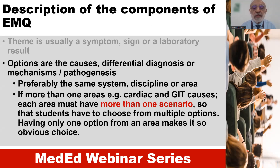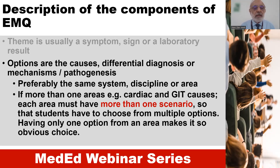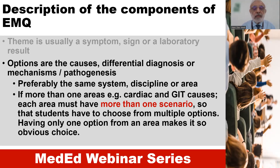If more than one area is covered — for example, cardiac and gastrointestinal causes — each area must have more than one scenario so that students have to choose from multiple options. Having only one option from an area makes it an obvious choice.